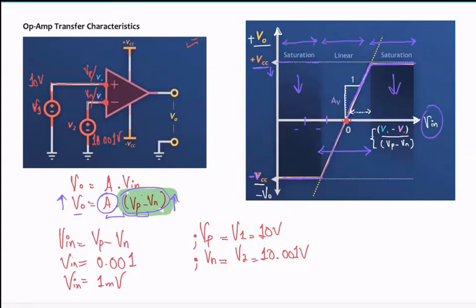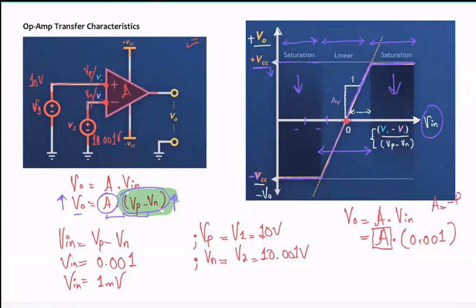Using the equation V-naught equals A times V-d, where A is the gain and V-d is 0.001 volts, the output depends on what gain you set — remember gain can be set by negative R-F over R-S in the case of the inverting amplifier. You also have to choose your VCC to make sure that positive VCC and negative VCC cover the output voltage you are looking for. This is extremely important.